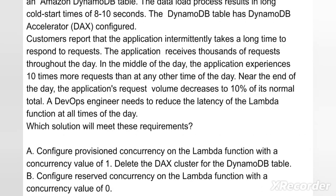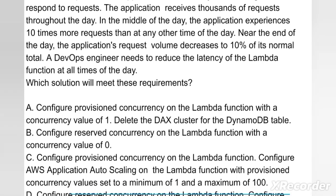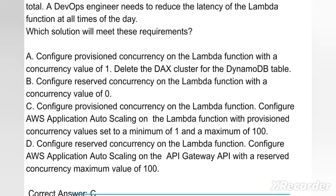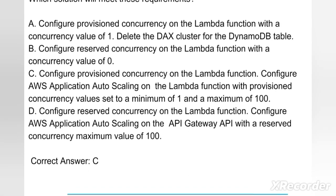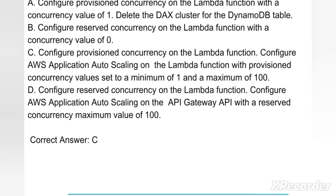Option A: Configure provisioned concurrency on the Lambda function with a concurrency value of 1. Delete the DAX cluster for the DynamoDB table. Option B: Configure reserved concurrency on the Lambda function with a concurrency value of 0. Option C: Configure provisioned concurrency on the Lambda function. Configure AWS Application Auto Scaling on the Lambda function with provisioned concurrency values set to a minimum of 1 and maximum of 100. Option D: Configure reserved concurrency on the Lambda function. Configure AWS Application Auto Scaling on the API Gateway API with a reserved concurrency maximum value of 100.